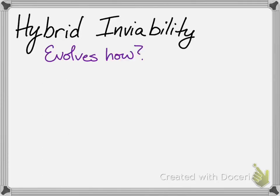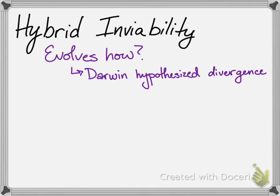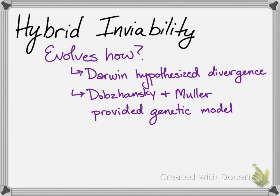How does hybrid inviability evolve? Darwin thought it must have had something to do with divergence, but it took many years for geneticists to back him up.